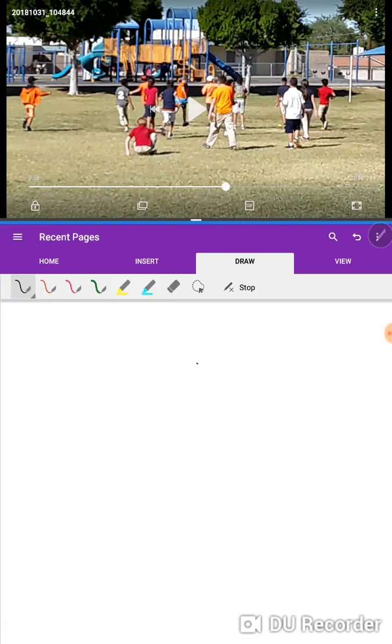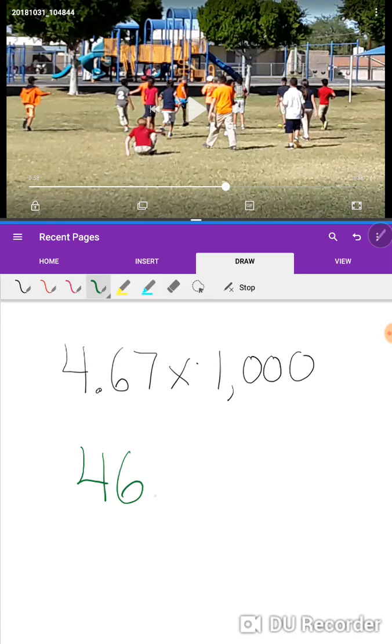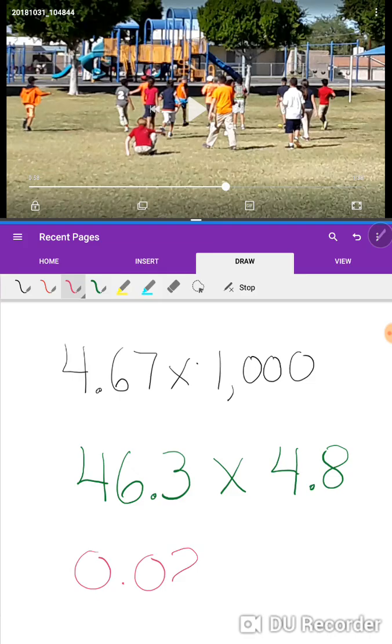First one is this one. Let's do 4.67 times a thousand. That's going to be the first one you're going to do. Again, you're going to quiz it. Remember, you do not need to stack this, you just have to move the decimal. Second problem I would like you to do for your quiz is 46.3 times 4.8. That's your second problem. And your third one, let's go with 0.08 or 8 hundredths times 42.6 or 42 and 6 tenths. So go ahead and do those three problems.